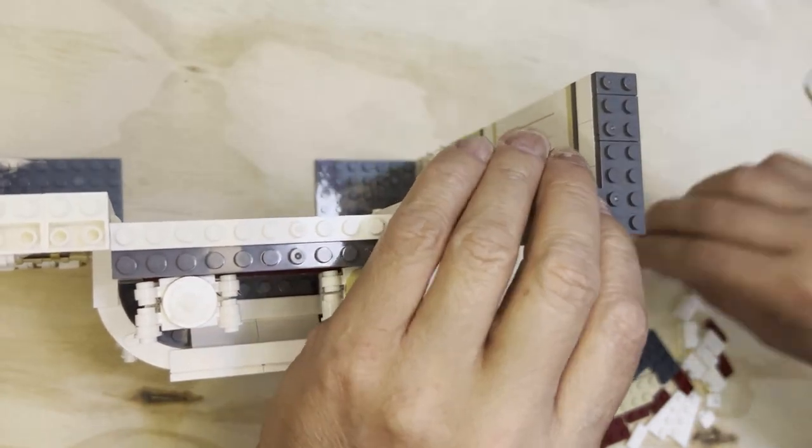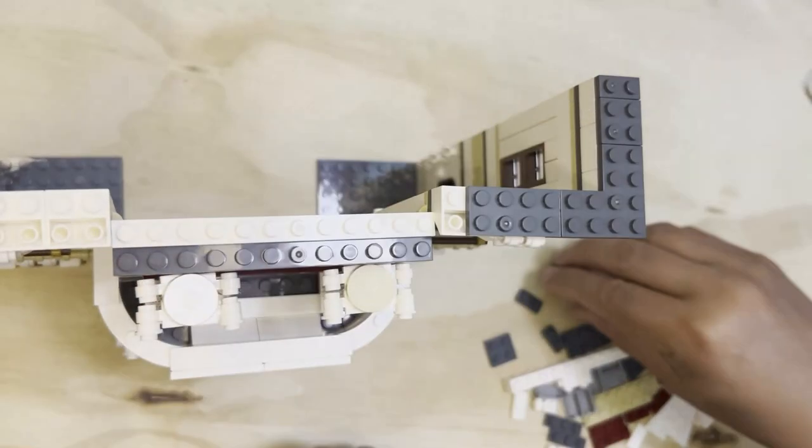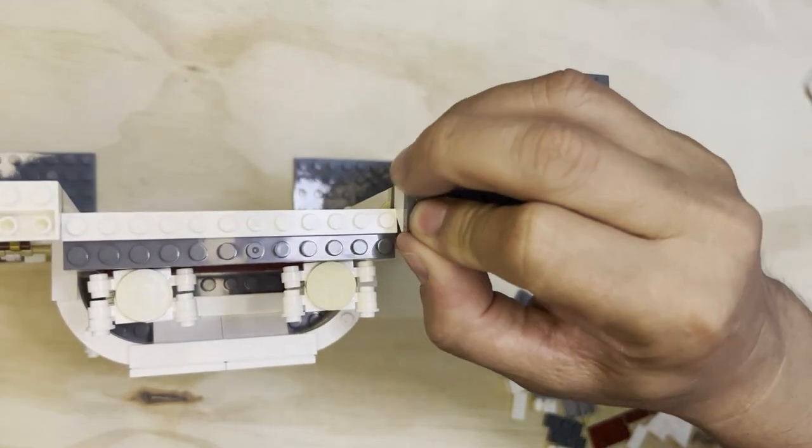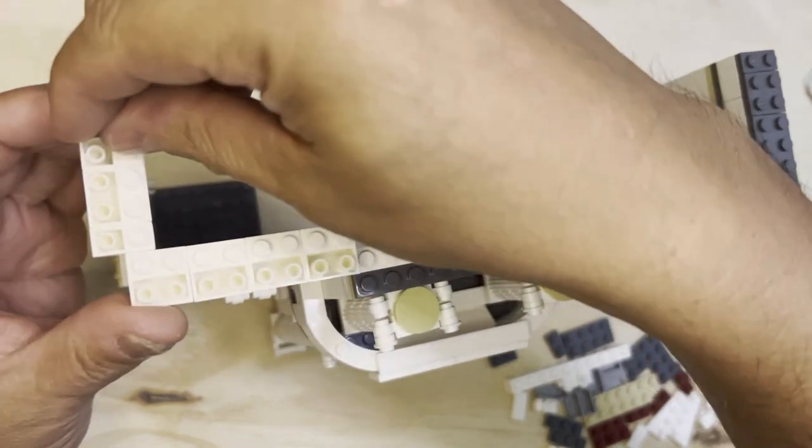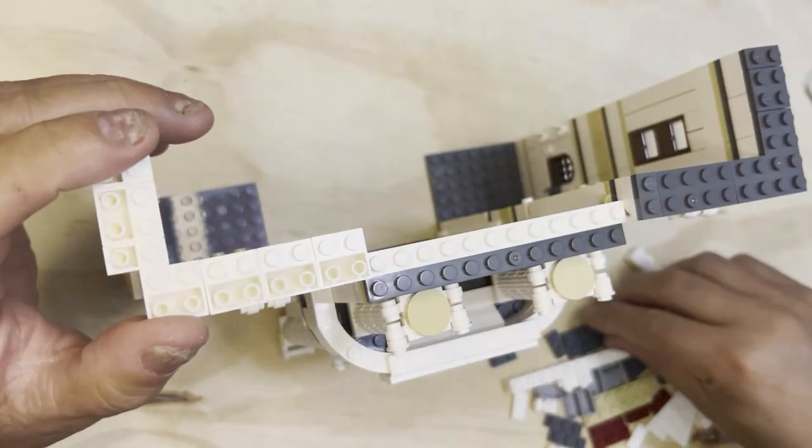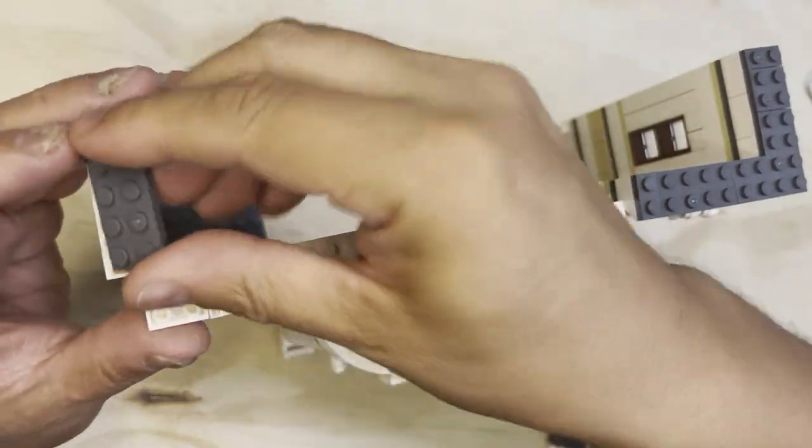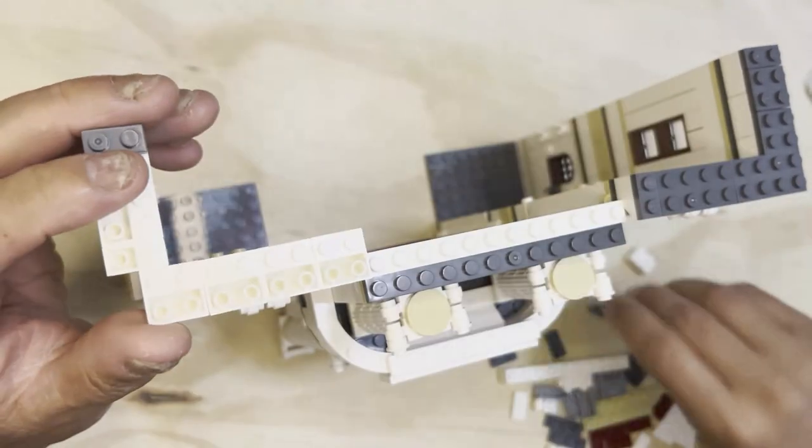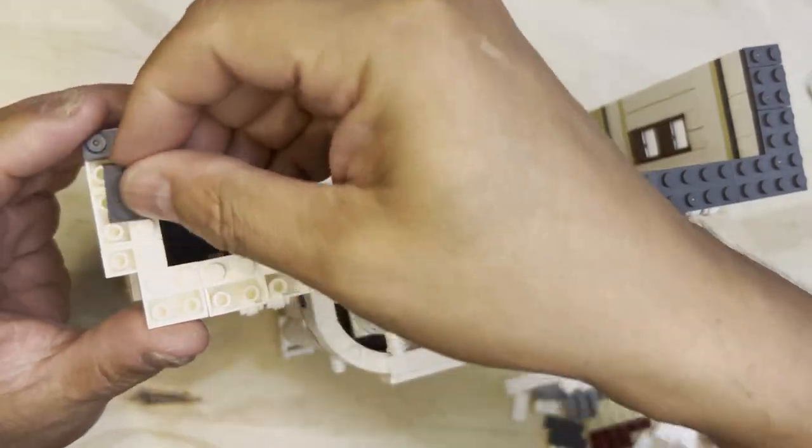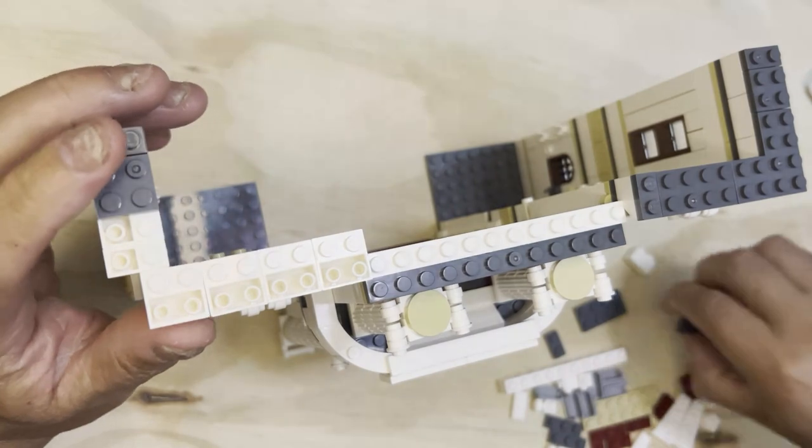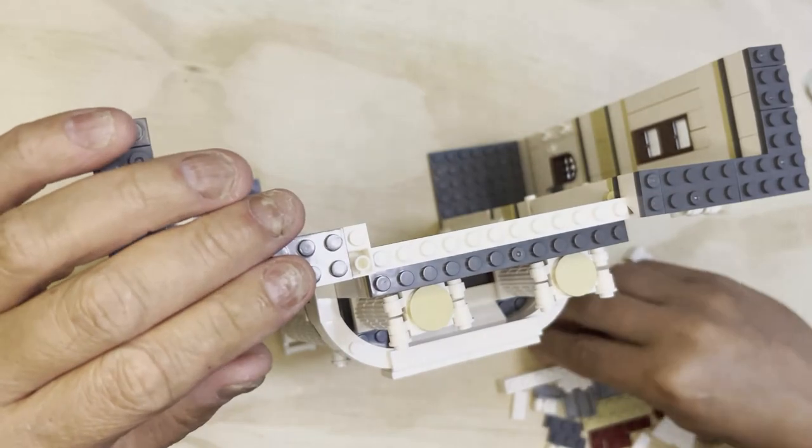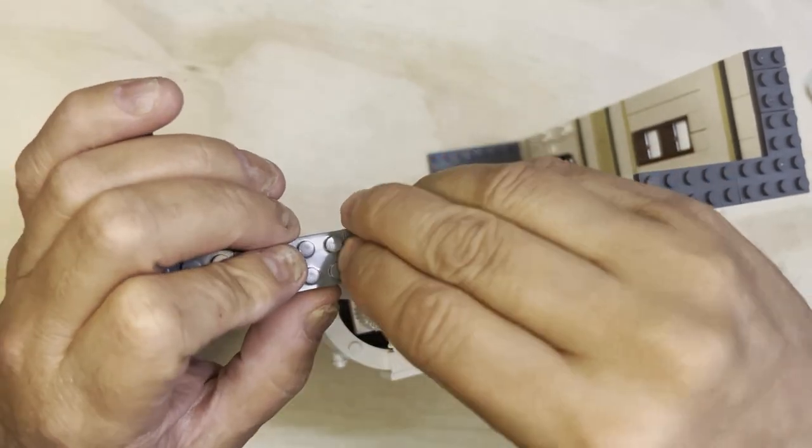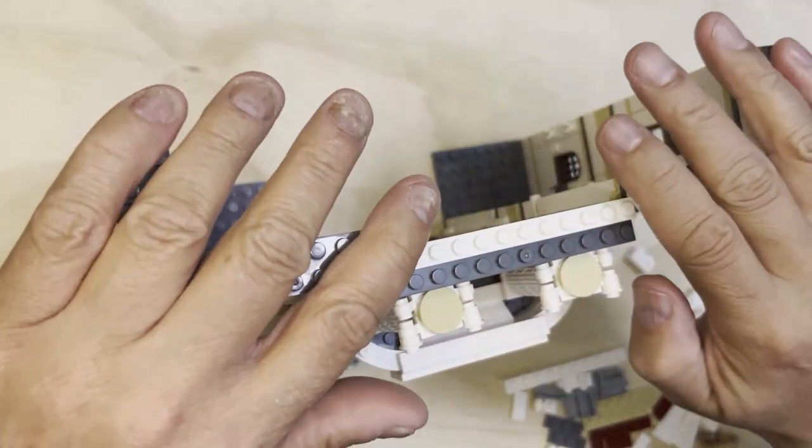And then one of these, and then like that. And now I'm going to go to the other side, and I'm going to do the same. Nope. I need a square. Two by two. Like this. And like that. There you go. Now that's topped off.